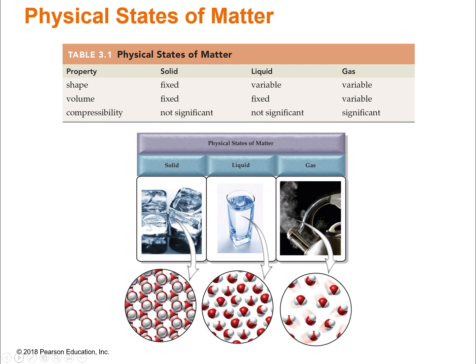This table summarizes what we're talking about in terms of the properties of solids, liquids, and gases — the shape, the volume, and whether or not you can compress each state of matter. Know this table. If you can understand what fixed versus variable means, and know that gases are the only things that can really be compressed, you should be good. Don't just memorize the chart — be able to explain it and give an example.